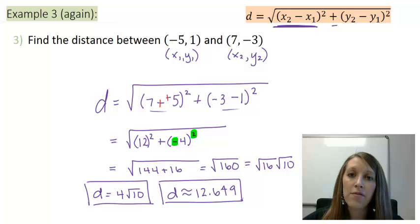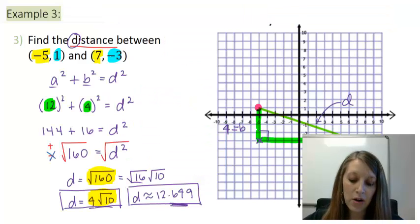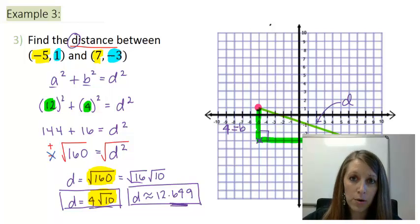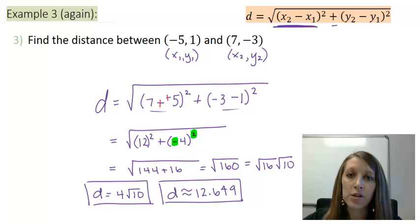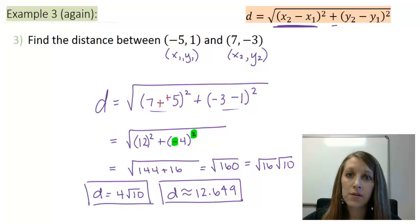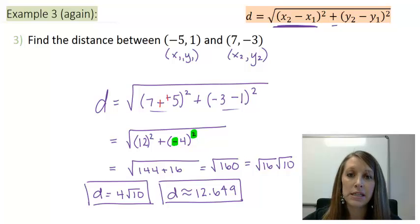Both methods have their advantages. The advantage of just using Pythagorean's Theorem is you don't have to memorize a formula, and the advantage of the formula is that you don't really have to draw it up and get a visual. I'm going to stop this video here because of time, but I'm going to do one more example in the next video of using the distance formula.